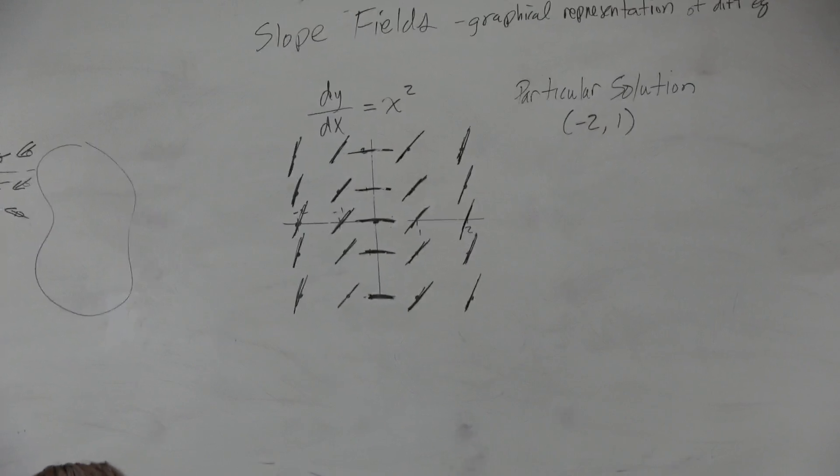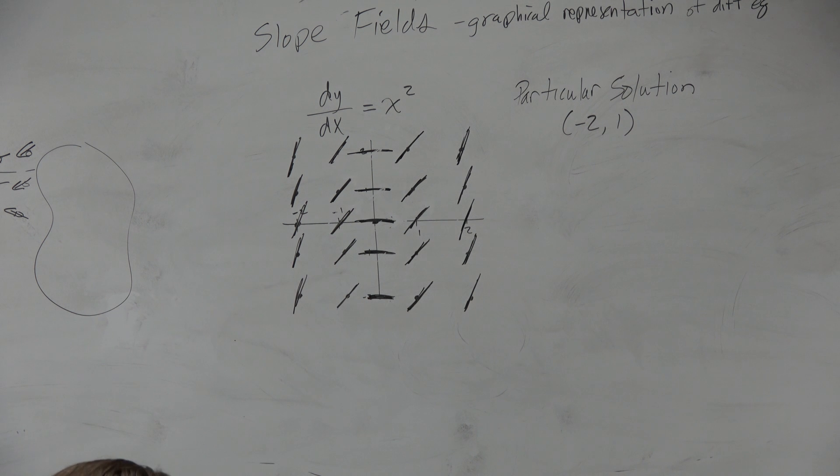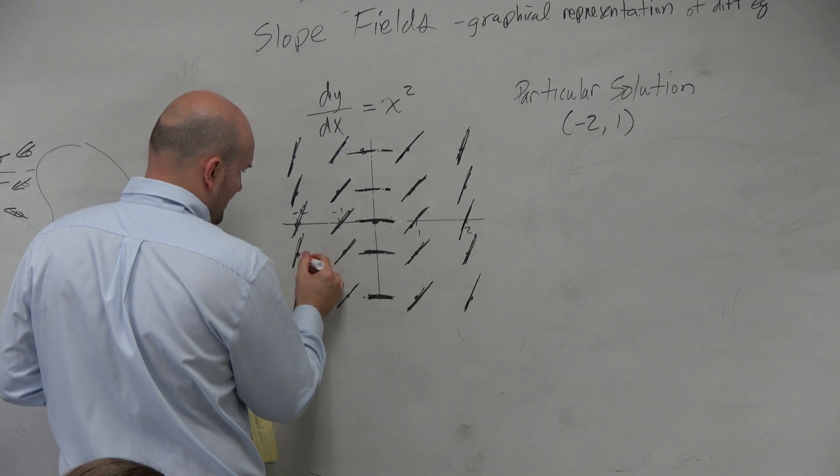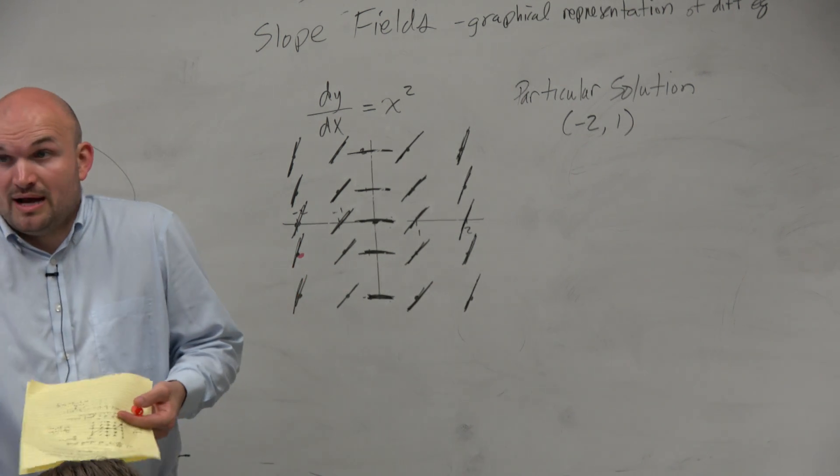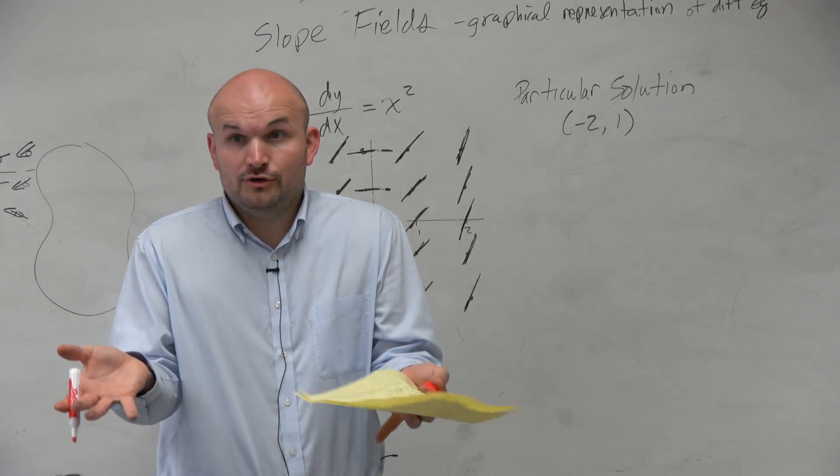The first way is we're going to look at the graph. So let's just kind of go to negative 2, 1 and draw a point. So negative 2, 1 is right here. And again, think of a weather pattern. You're dropped in the middle of the hurricane tornado. Where are you going to go?